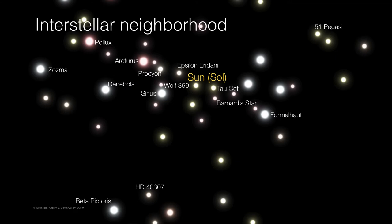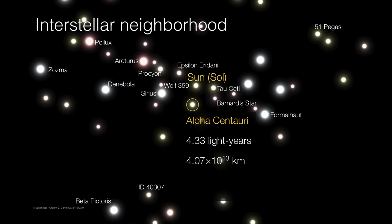The closest star to the Sun is Alpha Centauri, at a distance of about 4.3 light years — or putting that into perspective, at least 40 trillion kilometers distant.